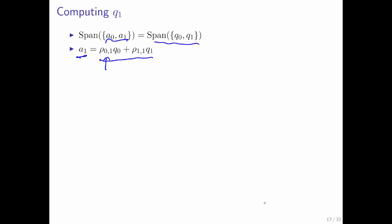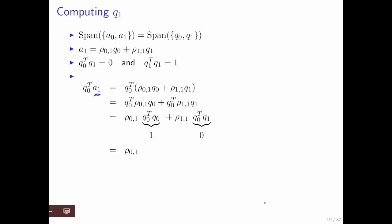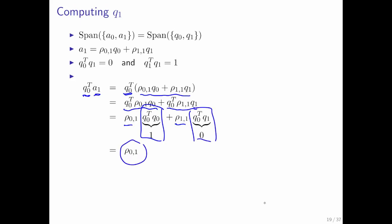Let's name the coefficients involved rho_{0,1} and rho_{1,1}. We know that q0 transpose q1 is 0, and q1 transpose q1 is equal to 1. If we take a1 and multiply it on the left by q0 transpose, that's the same as taking q0 transpose times this linear combination of q0 and q1. You can distribute the dot product and bring the scalar to the front in each term. This equals 1 for the q0 term and 0 for the q1 term. Therefore, the scalar rho_{0,1} must be equal to the inner product of q0 with a1.